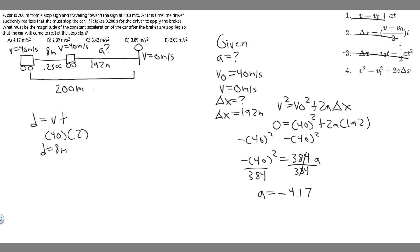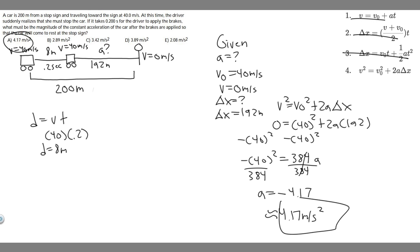Keep in mind what they're asking — they say the magnitude. When they talk about magnitude, that just means take the absolute value of your answer; they just want the positive value. So the answer is 4.17. The negative sign just indicates that we're slowing down — it's a decreasing velocity. So the answer to this problem is 4.17 meters per second squared, which is answer choice A. Hopefully you found this useful.